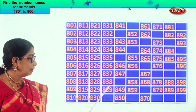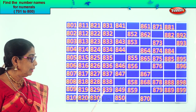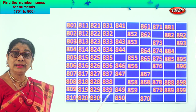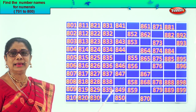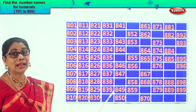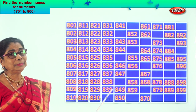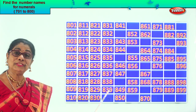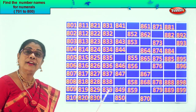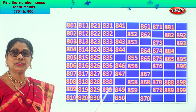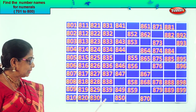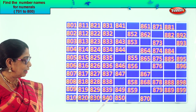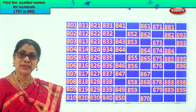Then 838, 839. After 9 comes 10 — after 39 comes 40. So the missing number is 840.